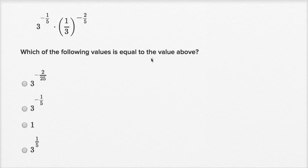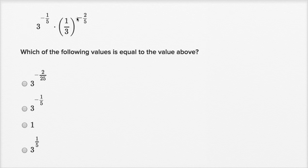Which of the following values is equal to the value above? We have this expression with a bunch of negative fractional exponents. At first you might say, how do I deal with this? Maybe I don't know what the fifth root of three is, much less the negative fifth root, and this one-third to the negative two-fifths. How do I simplify this?